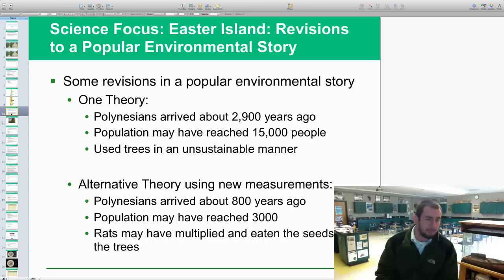One theory is that the Polynesians that built those big large head constructions arrived about 2,900 years ago. The population may have reached up to 15,000 people. And they used trees as their way of mobility around the island, even to get to deeper fishing spots. They made canoes out of those and transported people around and also fish. And they used trees in an unsustainable manner, which means they took too many before letting them regrow. They figured that was kind of the known theory for a while.